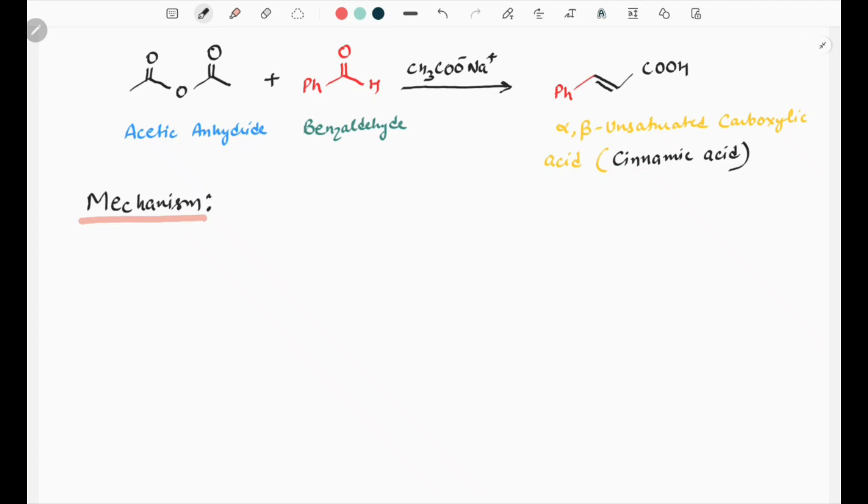To explain the mechanism of Perkin reaction, let us consider this reaction in which acetic anhydride reacts with benzaldehyde in the presence of weak base sodium acetate to form the product, which is alpha beta unsaturated carboxylic acid or cinnamic acid.